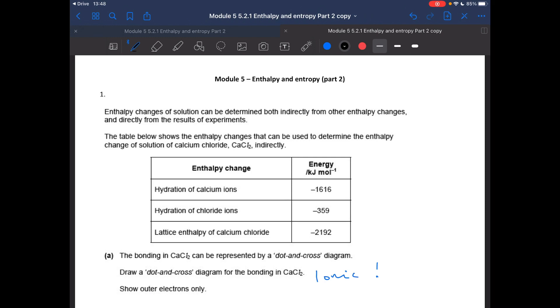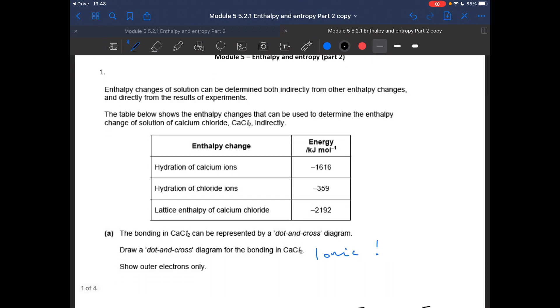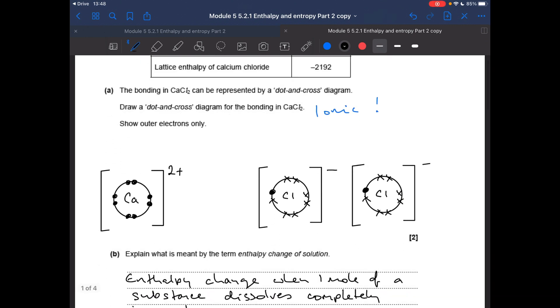Question one starts off nice and easy with a dot and cross diagram for the bonding in CaCl2, showing outer electrons only. You can see I've written it's ionic, metal and non-metal, so we can represent the calcium 2+ ion like that, or if you wanted to just leave that empty and we draw two separate chloride ions.